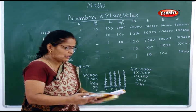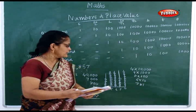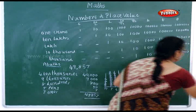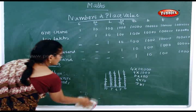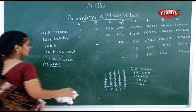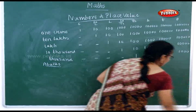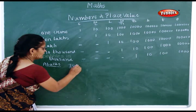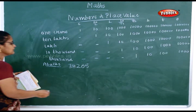Now let's go on to the practice from your book. Next number: 38,205. How will you put it in the abacus?